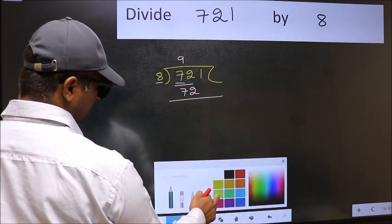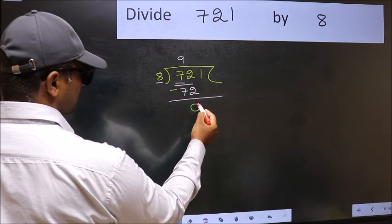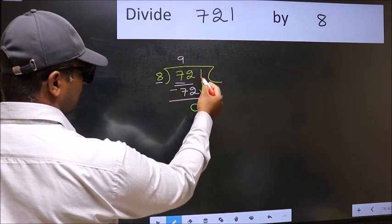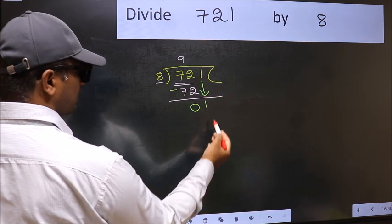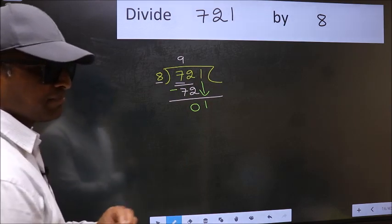Now we should subtract. 72 minus 72, 0. After this, bring down the beside number. So 1 down. After this step, the mistake happens.